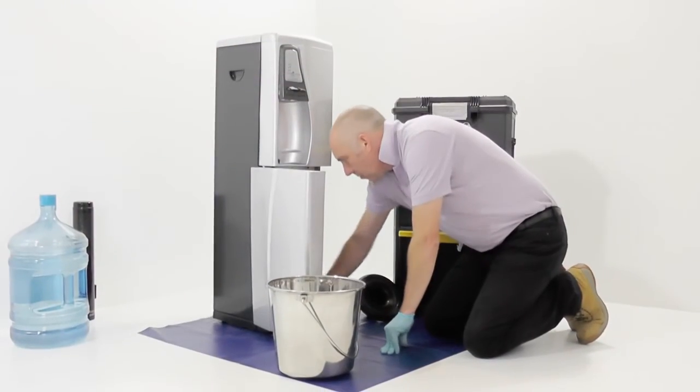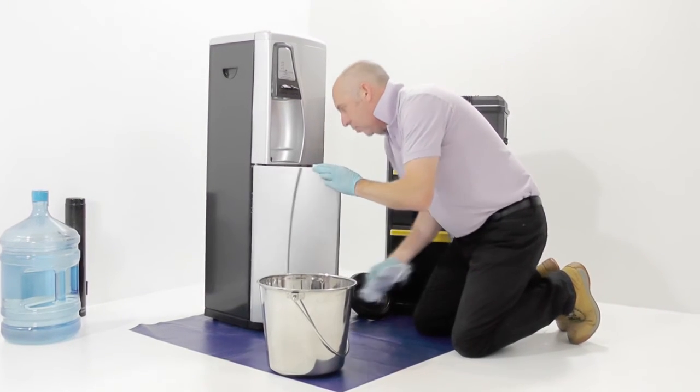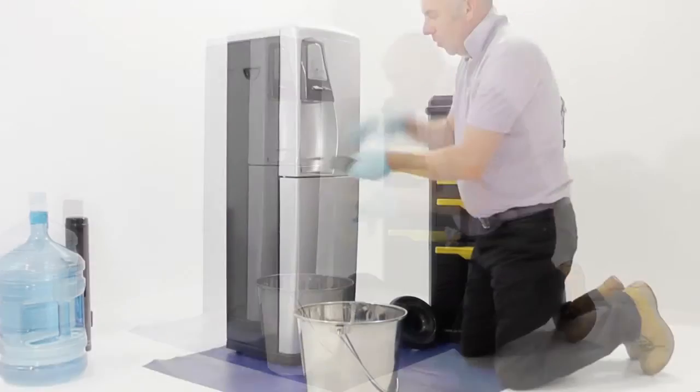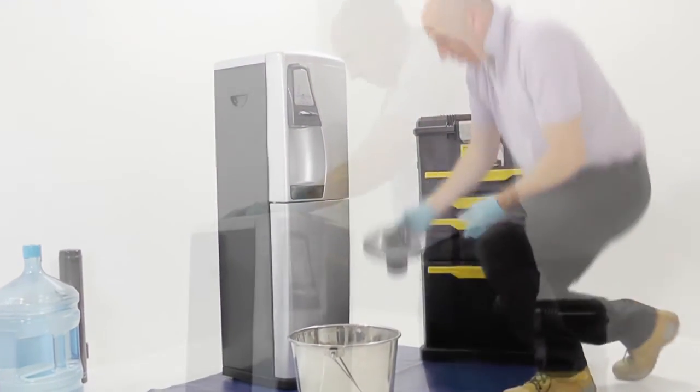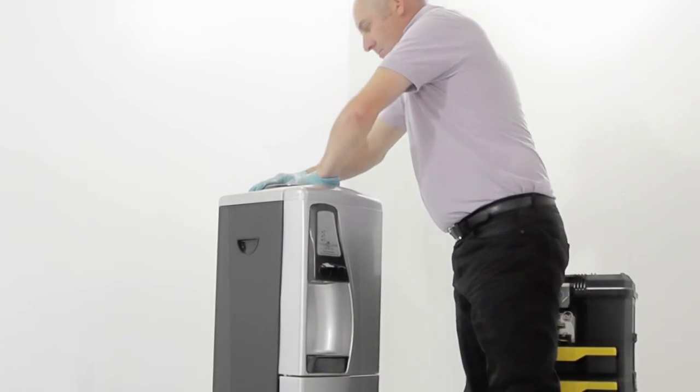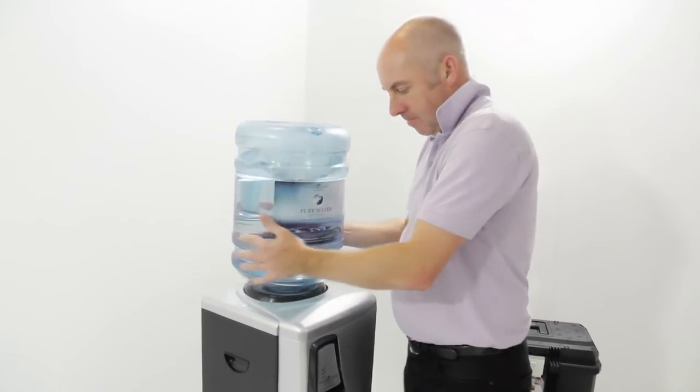So now we're just going to dry the machine. Reassemble. Pop your drip tray back on. Pop your water guard back on. And all we're going to do now is put the bottle back on and test the water.